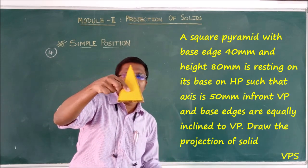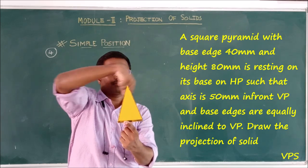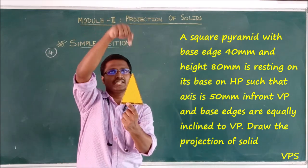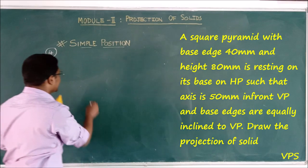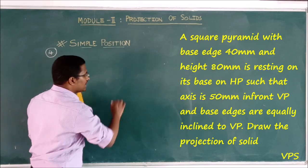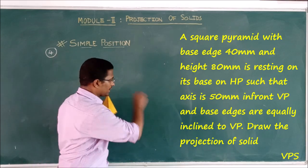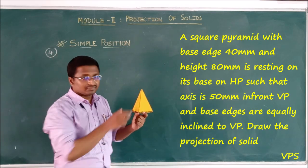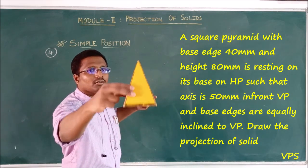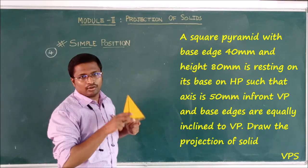In the top view, we have the xy-line and the square. We are going to see the top view — the xy-line and the square. So that is the top view: xy-line and square. The axis of the solid is 50mm in front of VP.